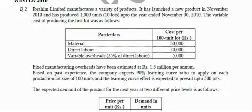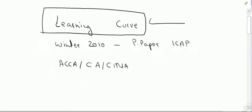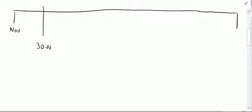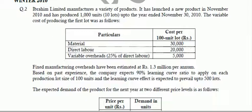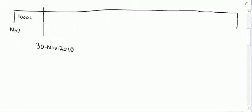The question says Abraham Limited manufactures a variety of products. It has launched a new product in November 2010 and has produced 1000 units or 10 lots up to the year end of 30th November 2010. I recommend that during solving learning curve questions you must draw a timeline about what is stated in the question. The company started production in November and the year end is 30th November 2010, during which 10 lots or 1000 units were produced.